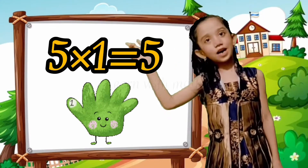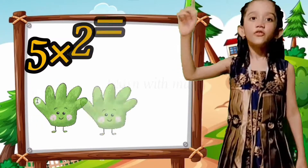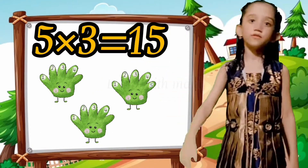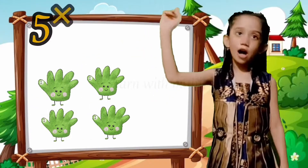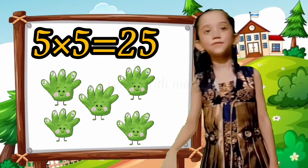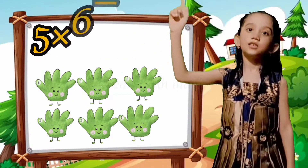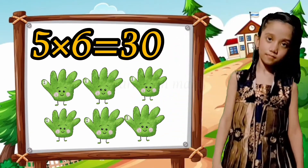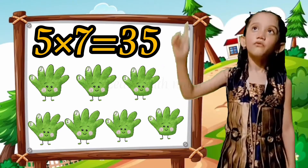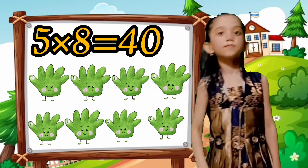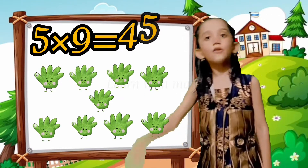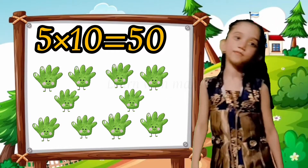5 ones are 5. 5 twos are 10. 5 threes are 15. 5 fours are 20. 5 fives are 25. 5 sixes are 30. 5 sevens are 35. 5 eights are 40. 5 nines are 45. 5 tens are 50.